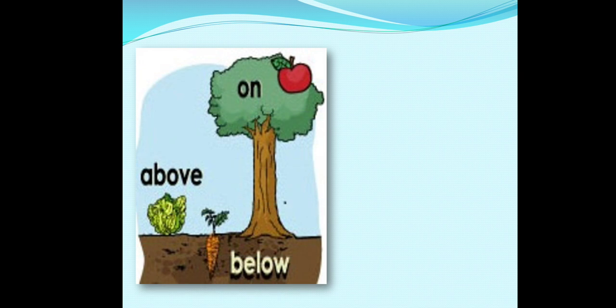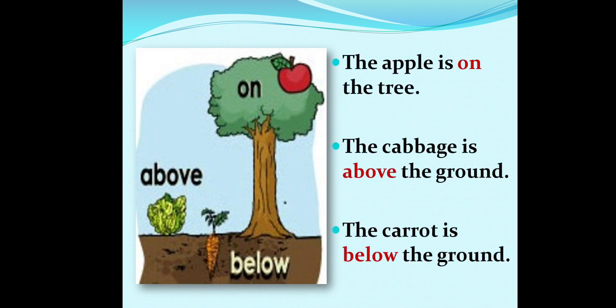We will go for one more example. In this picture, an apple is on the tree. The cabbage is above the ground. And the carrot is below the ground.